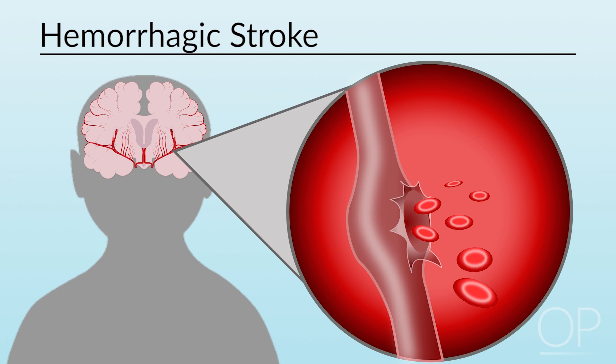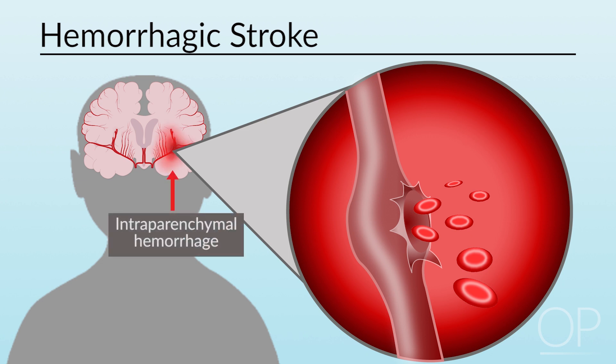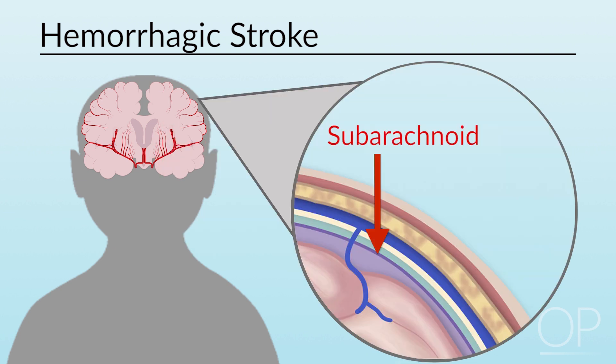Hemorrhagic strokes occur when there is tissue damage due to bleeding within the brain — an intraparenchymal hemorrhage — or adjacent to the surface of the brain, a subarachnoid hemorrhage. This produces mass effect and ischemia of the adjacent tissues.